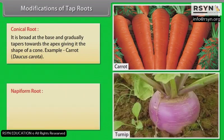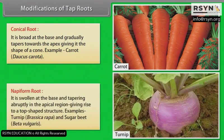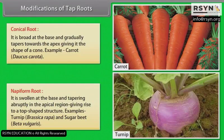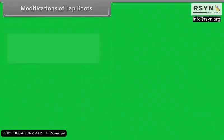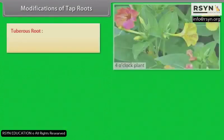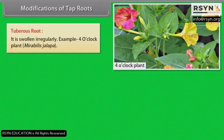Napiform root: It is swollen at the base and tapering abruptly in the apical region, giving rise to a top-shaped structure. Examples: turnip (Brassica rapa) and sugar beet (Beta vulgaris). Tuberous root: It is swollen irregularly. Example: four-o'clock plant (Mirabilis jalapa).